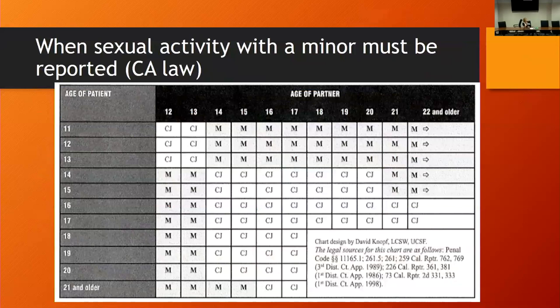If you have a young child who's pregnant or wants birth control, you have to ask the age of the partner. In California, if you have a 13-year-old child who is having sex with a 14-year-old, that child has a mandated report to Child Protective Services made. On the algorithm, CJ means clinical judgment and M means mandated — a legal requirement to report. A 14-year-old can't have sex with a 12 or 13-year-old. For 14 to 20-year-old partners, it's clinical judgment. The M's — mandated — means that's a legal thing you have to report regardless.